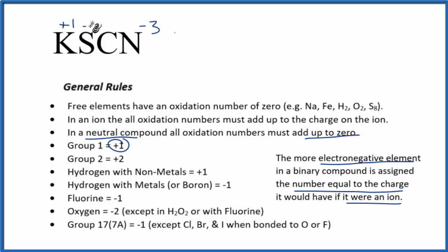So we're left with just the carbon now, and we know that everything is going to add up to zero. So we could make an equation. We could say one minus two plus x minus three equals zero. So x minus four equals zero, and x then would equal a positive four.